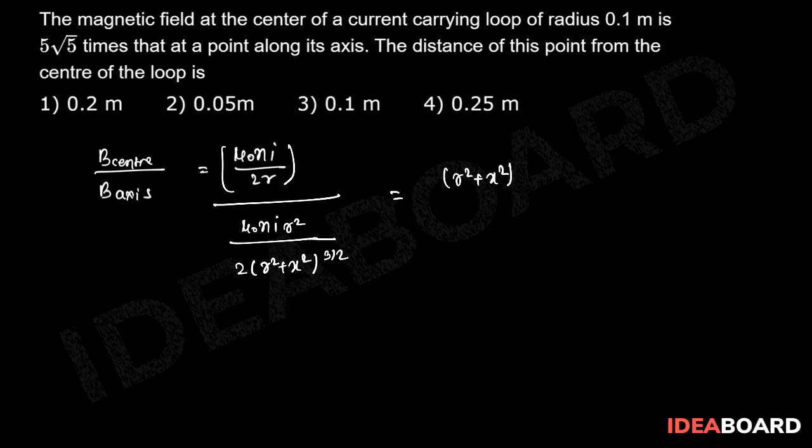Now the ratio is given as 5 root 5, so that should be equal to r square plus x square to the power 3 by 2 divided by r square. Solving it, we get the value of x.